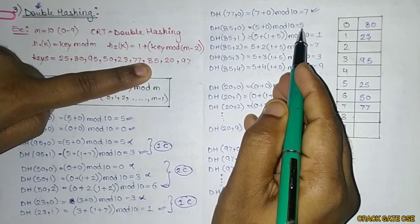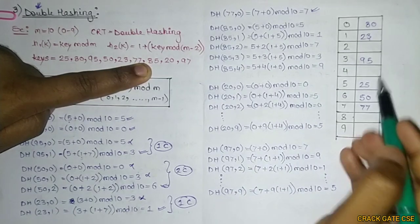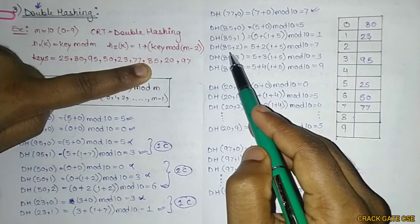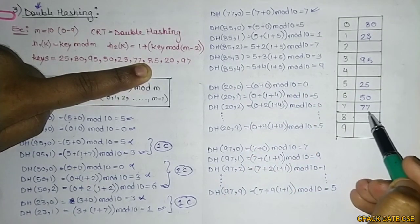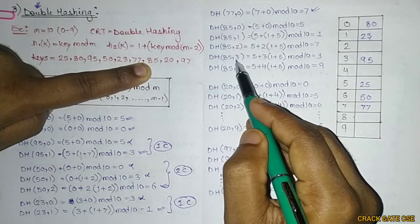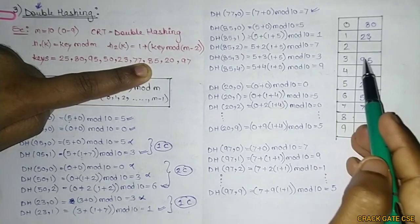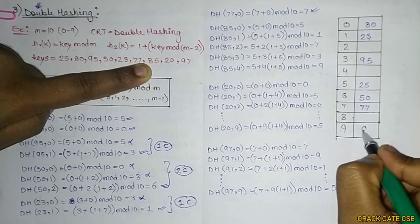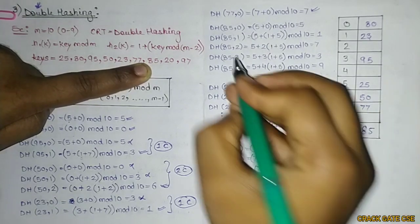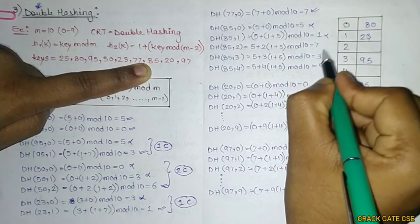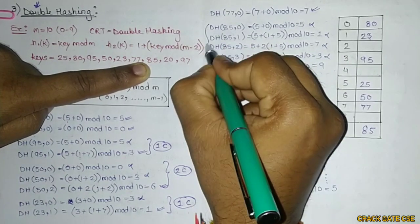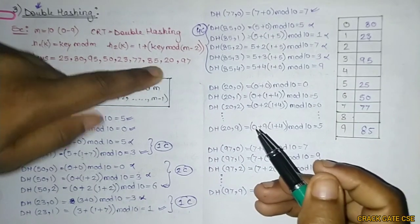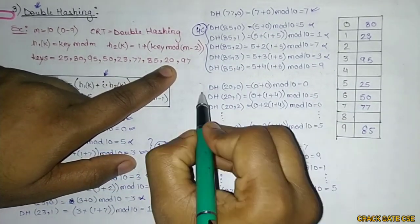For key 85: with i=0 position is 5 — collision. i=1 gives 1 — collision. i=2 gives 7 — collision. i=3 gives 3 — collision. i=4 gives 9 — available! So 85 is stored at position 9 with a total of 4 collisions.